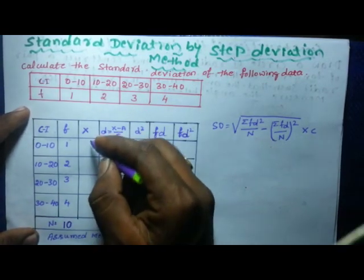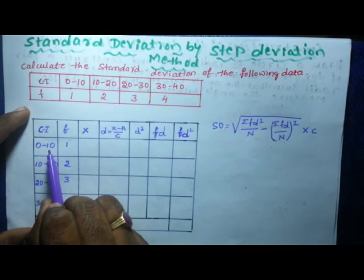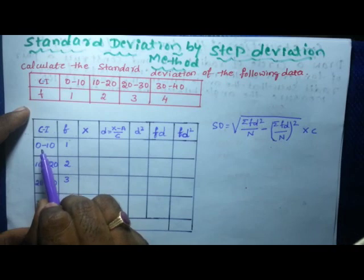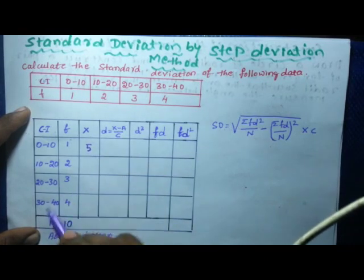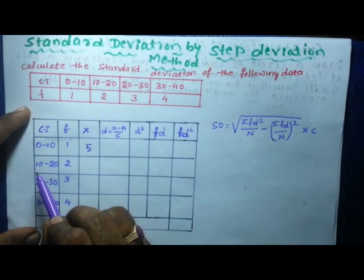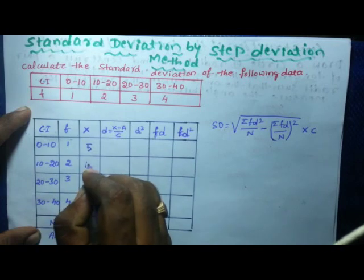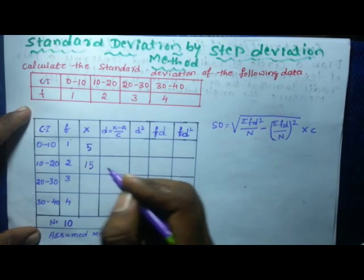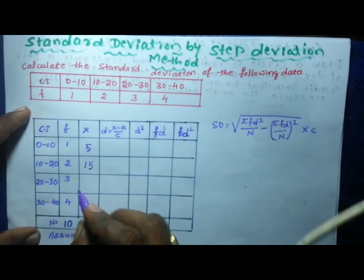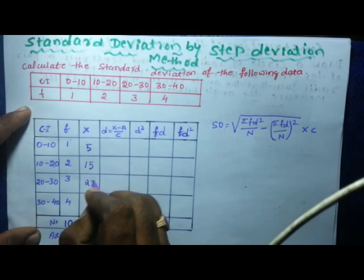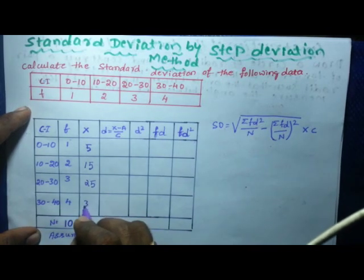Then you can find the middle term by adding the class interval values and dividing by 2. So 10 plus 0 is 10, divided by 2 gives 5. Similarly, 20 plus 10 is 30, divided by 2 gives 15. Then 30 plus 20 is 50, divided by 2 gives 25. Then 40 plus 30 is 70, divided by 2 gives 35.